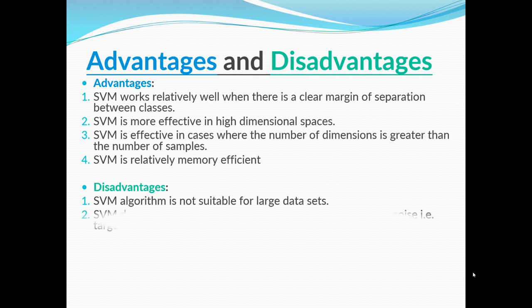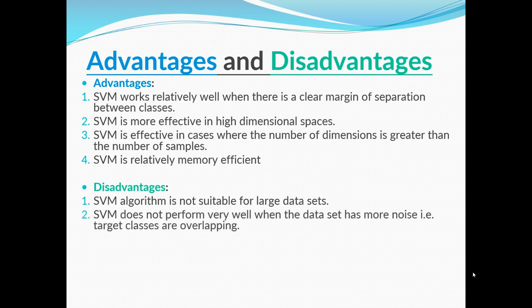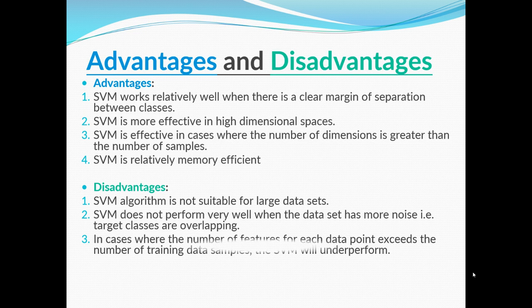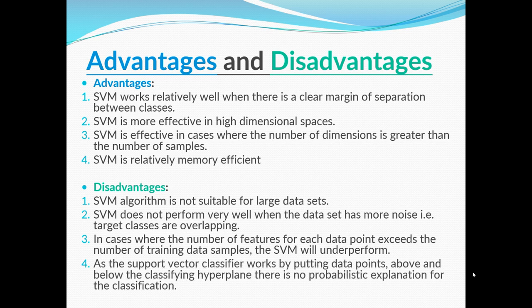On the other hand, the disadvantages of SVM are: the SVM algorithm is not suitable for large datasets. SVM does not perform very well when the dataset has more noise, such as when target classes are overlapping. In cases where the number of features for each data point exceeds the number of training samples, SVM will underperform. Additionally, the support vector classifier works by placing data points above and below the classifying hyperplane, and there is no probabilistic explanation for the classification.